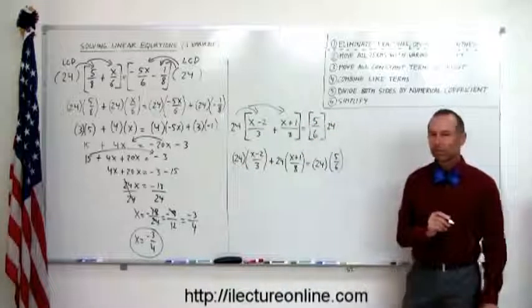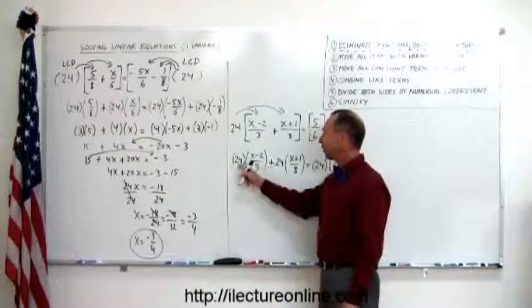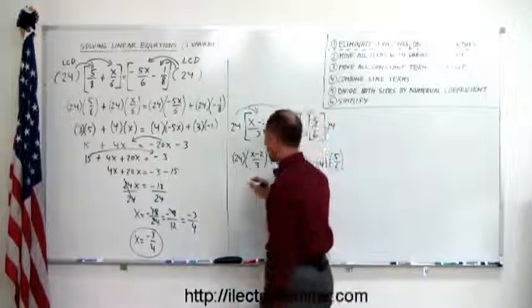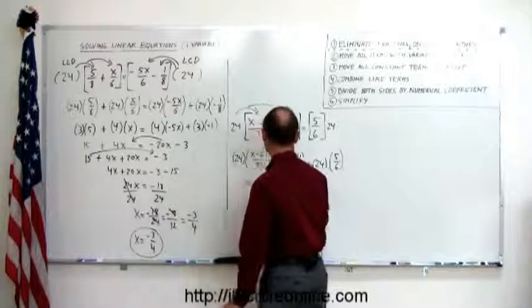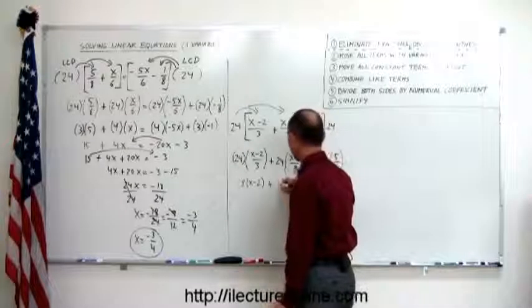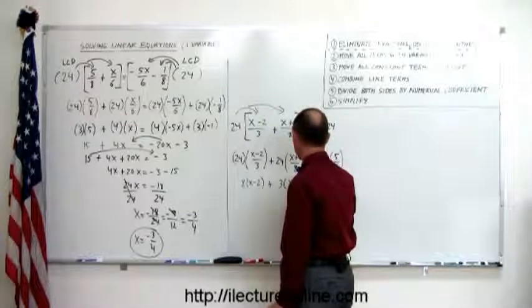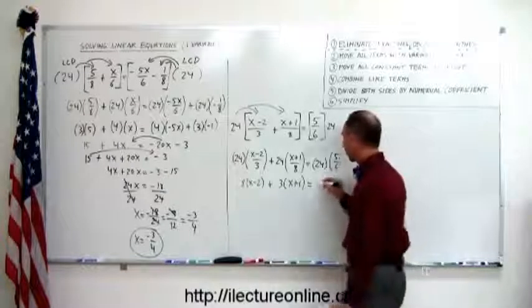So what's the next step? Well, we go ahead and notice that 3 goes into 24 exactly 8 times, so this can be simplified to 8 times x minus 2 plus 8 goes into 24 exactly 3 times, so this becomes 3 times x plus 1. And 6 goes into 24 exactly 4 times, so this becomes 4 times 5.